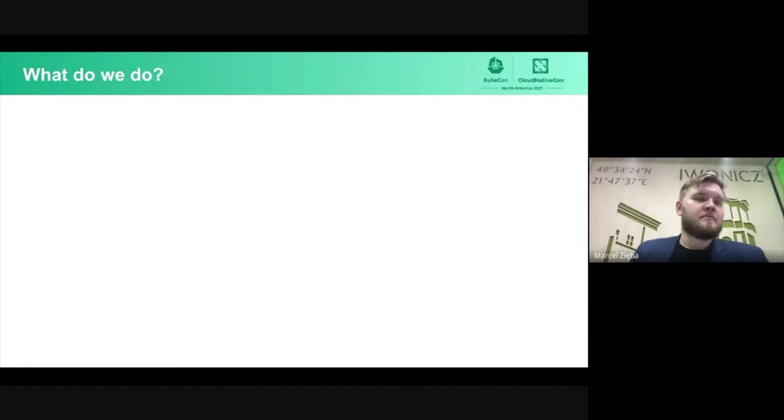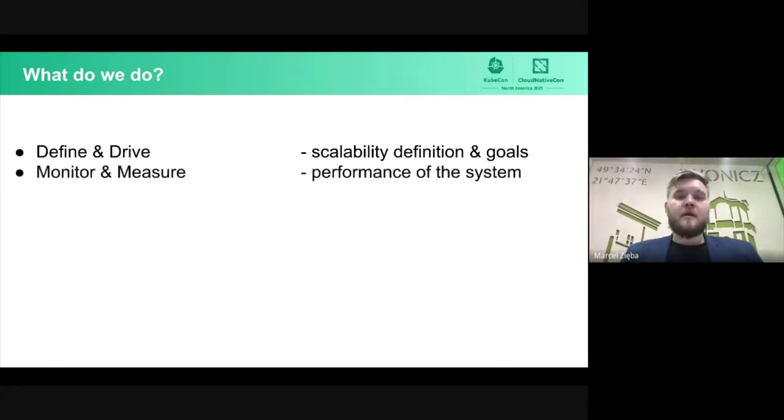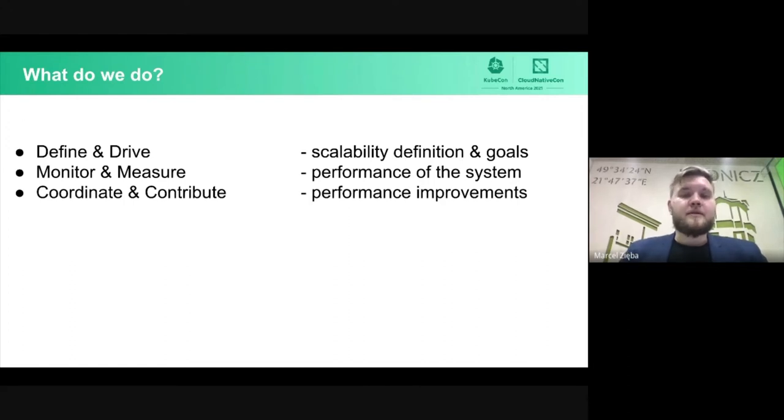First of all, let's start with what do we do as SIG Scalability? There are five different main areas that we are interested in. Starting with defining and driving scalability definition and goals. Once we have those goals, we are interested in monitoring and measuring performance of Kubernetes. So, we have goals, we have measurements. Now it's time for improvements. With those measurements, we can find some bottlenecks and drive performance improvements in Kubernetes. And those performance improvements can happen in two different ways. Either we just contribute to Kubernetes or we coordinate with different SIGs to make it happen.